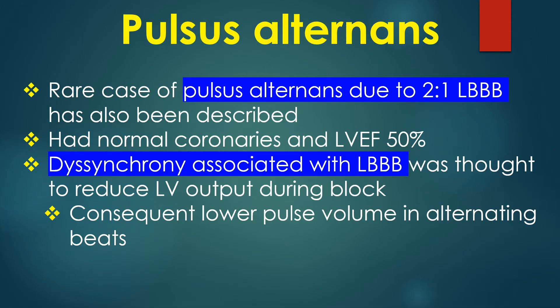A rare case of pulsus alternans due to 2:1 left bundle branch block has also been described. The patient had normal coronaries and a left ventricular ejection fraction of 50%. The dyssynchrony associated with LBBB was thought to reduce LV output during the block, resulting in a consequent lower pulse in alternating beats.